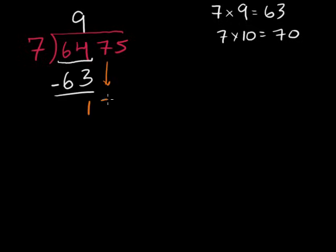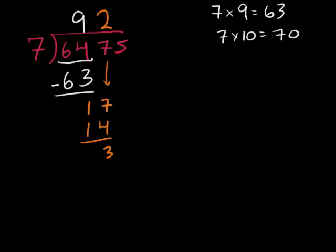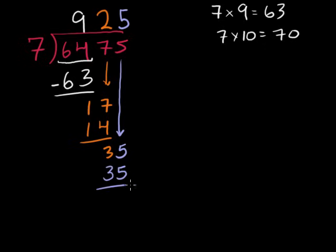Bring down the 7. 7 goes into 17 how many times? 7 times 2 is 14, and 7 times 3 is 21 — so 3 is too big. 7 goes into 17, 2 times. 2 times 7 is 14. 17 minus 14 is 3. Now bring down the 5. 7 goes into 35 — that's in our 7 multiplication tables — 5 times. 5 times 7 is 35, and the remainder is 0.